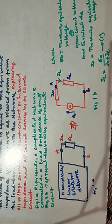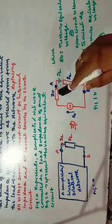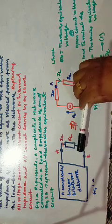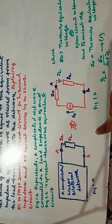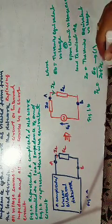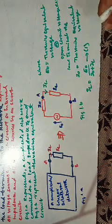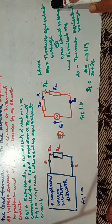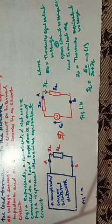The value of this impedance Z0 is equal to the impedance of the network as seen from the load terminals into the network, replacing all the voltage sources by a short circuit or internal impedance and current sources by an open circuit. For this circuit, IL is the current through Z0 and ZL, and E0 is the open circuit voltage. So IL is equal to E0 divided by Z0 plus ZL, where E0 is the Thevenin equivalent voltage, or open circuit voltage across load terminals AB, and Z0 is the Thevenin's equivalent impedance.